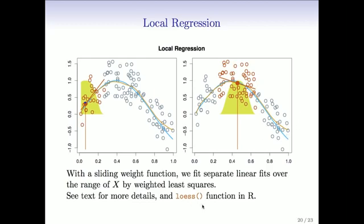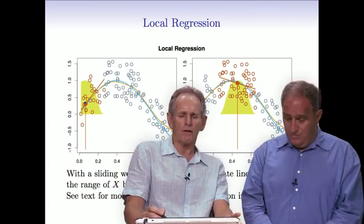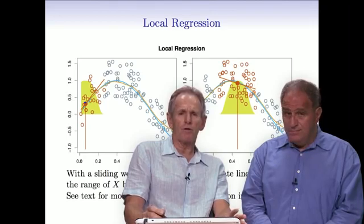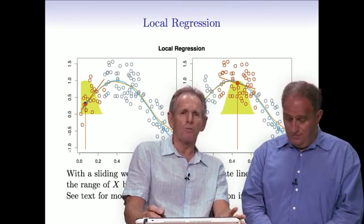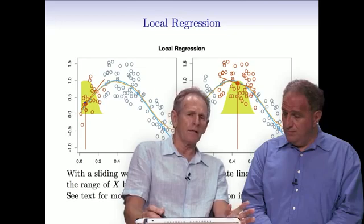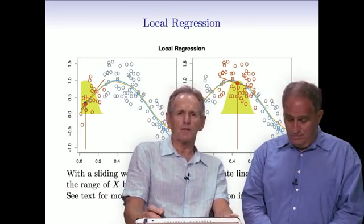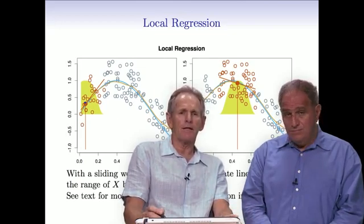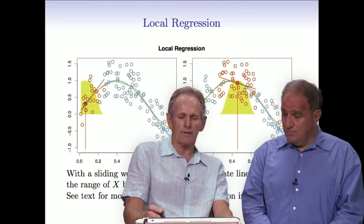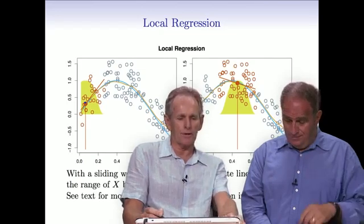So as Rob says, lowess is the function in R for fitting this local regression. And we'll play with that a little bit in the lab, and you'll see it's very easy to use. So we're not going to say anything much more about local regression, but the concept of local regression is important. You can read more about it in the book and in our other book, Elements of Statistical Learning, and you'll see it's actually a very rich area and allows you to do lots of flexible things.